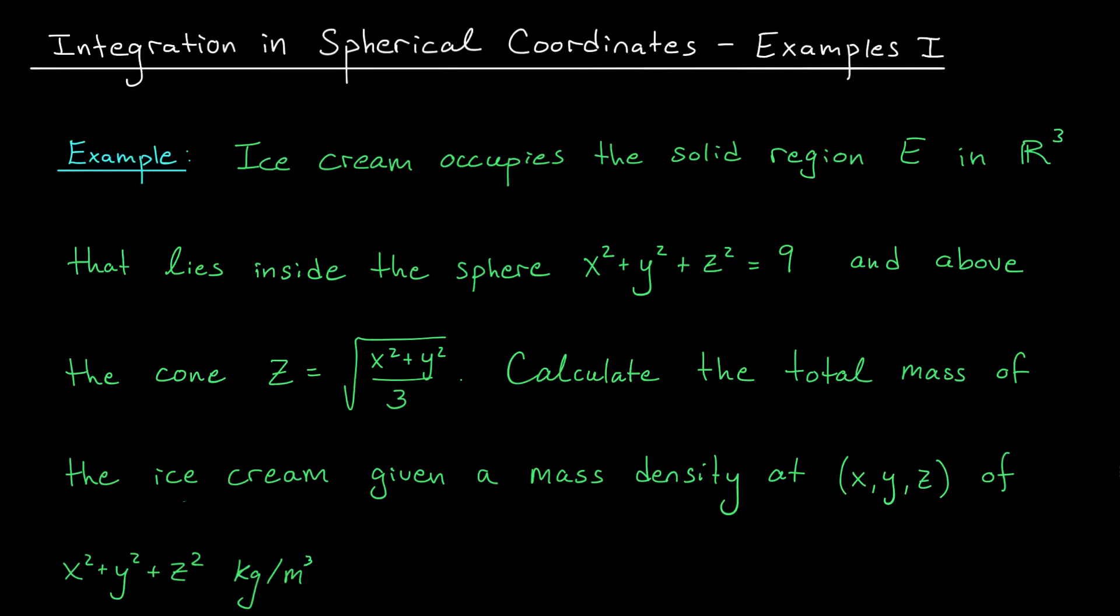Hi there folks, and welcome back. In this lesson, we're going to put our knowledge of spherical coordinates to use to solve the following example problem. Here, we have some ice cream occupying the solid region E in R³ that lies inside this sphere and above this cone. We'd like to calculate the total mass of ice cream, given a mass density at point (x, y, z) of x² + y² + z² kilograms per meters cubed. Now I know there's a lot going on in this question, so let's take a step back and try to establish a game plan.